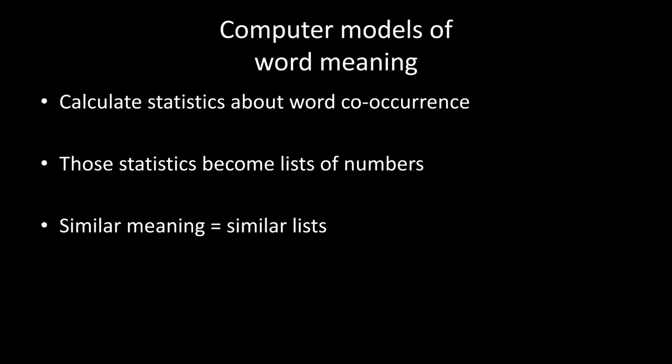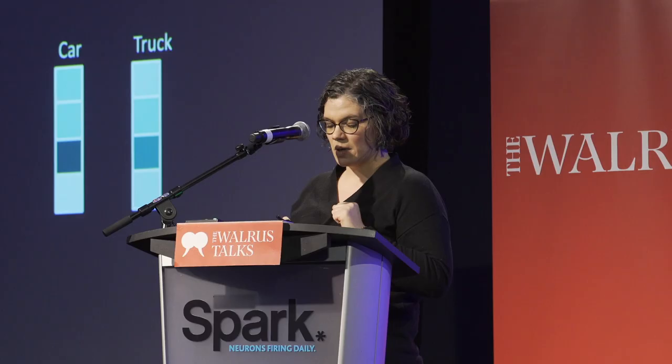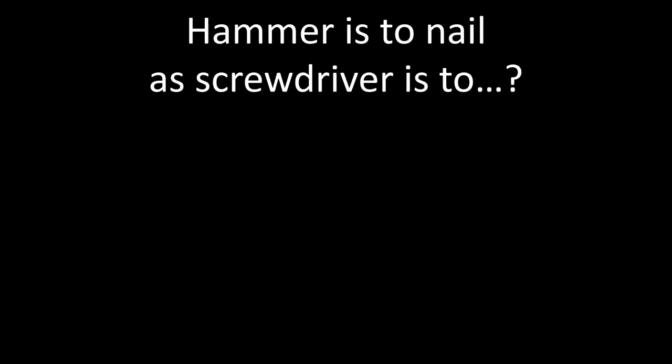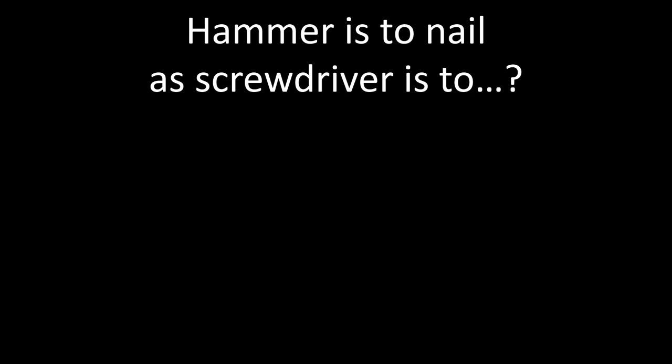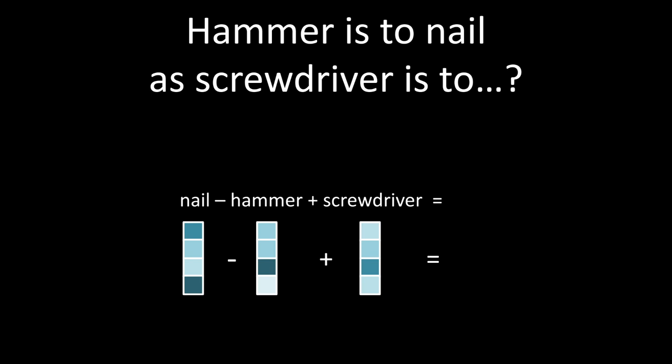We calculate statistics about word co-occurrence — when two words occur together — and we turn those statistics into lists of numbers. When words have similar meaning, they will have similar lists. Here I'm representing the numbers with the color blue; if it's more blue, it's a larger number. Car and truck have similar lists of numbers, but they're not exactly the same. Now, to actually perform the analogy task, we literally do math on these lists of numbers. We take the list for 'nail,' subtract the list for 'hammer,' and add the list for 'screwdriver' element by element. That gives us a new list of numbers, and that new list tends to be close to the correct answer — it's close to the co-occurrence statistics for the word 'screw.'